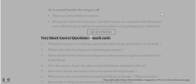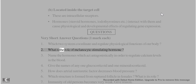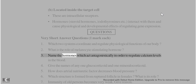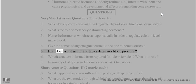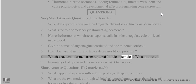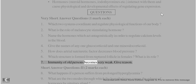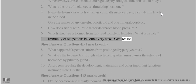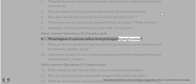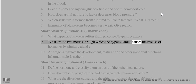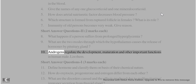Practice Questions – Very Short Answer (1 mark each): 1. Which two systems coordinate and regulate physiological functions of our body? 2. What is the role of melanocyte stimulating hormone? 3. Name the hormones which act antagonistically to regulate calcium levels in blood. 4. Name one glucocorticoid and one mineralocorticoid. 5. How does atrial natriuretic factor decrease blood pressure? 6. Which structure is formed from a ruptured follicle in females and what is its role? 7. Immunity of old persons becomes very weak – give reason.